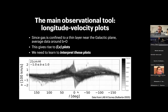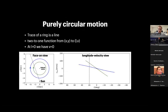Here I show an example of the full-sky LV plot from neutral hydrogen. The galactic center is at l=0, and moving along the x-axis you move along the galactic plane; at 180 degrees is the galactic anti-center. On the y-axis is the line-of-sight velocity. We start with the simplest possible motion — purely circular motion. In the face-on view I show two circular orbits; on the right is the longitude-velocity view where a ring is mapped into a line.